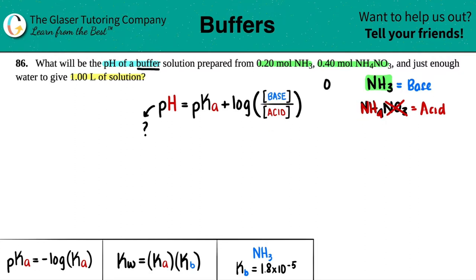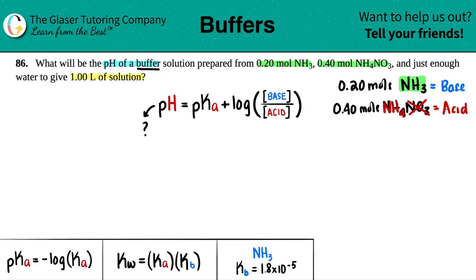Now they did say we had 0.20 moles, and maybe I'll bring this over a little bit. So I have 0.20 moles of NH3 and then I have 0.40 moles of NH4NO3. Keep in mind that since you only had one NH4 out of the whole compound, this number is still the same because it's a one-to-one mole ratio. So the number for the top, the base number, since NH3 is the base, that would be 0.20, and the number for the bottom is 0.40.